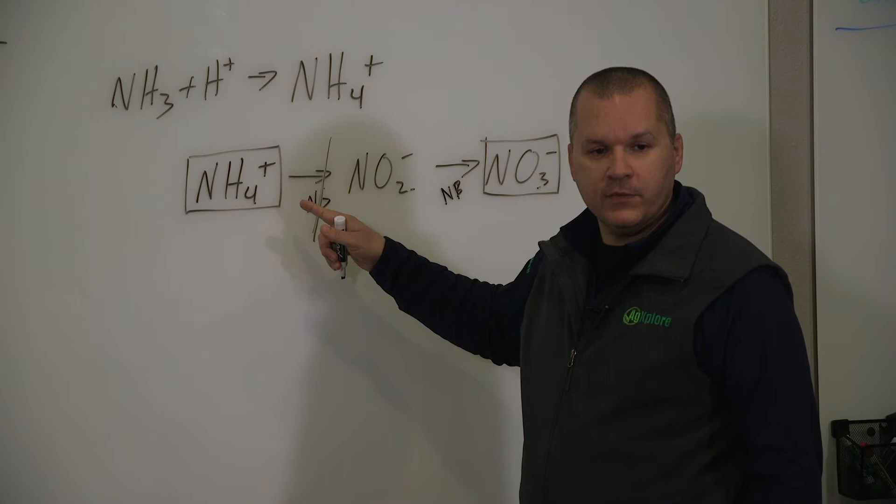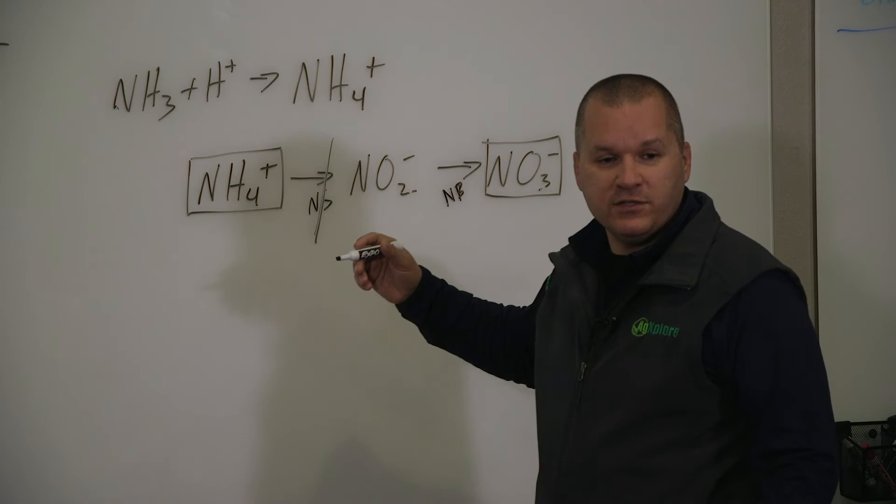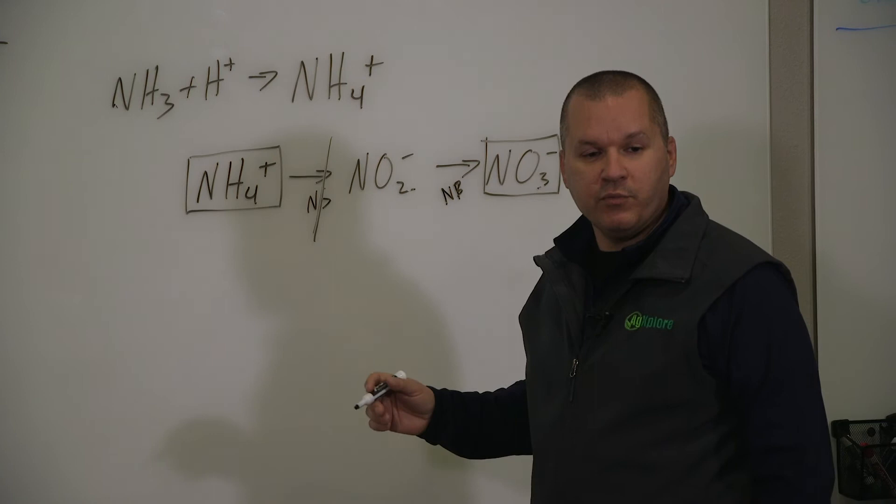So you may have kept it in a plant available ammonium form but you just told it to go run and hide and find a place to park. Well, if you're dropping anhydrous and you're putting it seven inches deep in the soil profile, it's going to have to start wiggling down through and find a place to park.